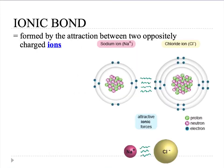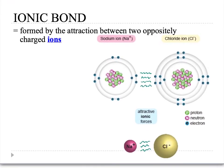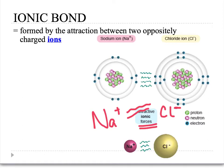An ionic bond is formed by the attraction between two oppositely charged ions. In this case, we have a sodium ion with a positive charge attracted to chloride, which now has a negative charge. The attractive forces between them are ionic forces, and that's how an ionic bond is formed.